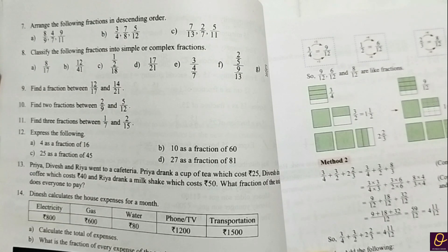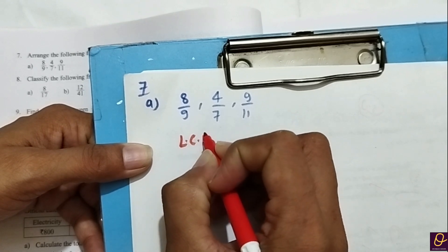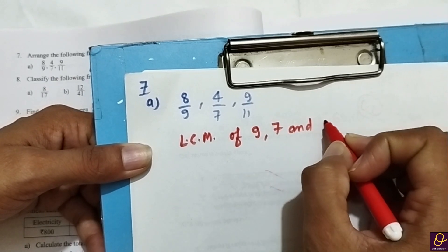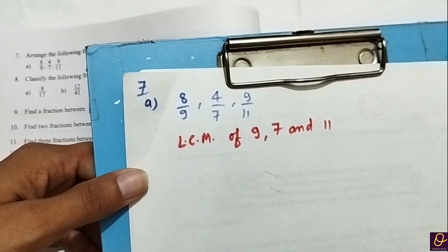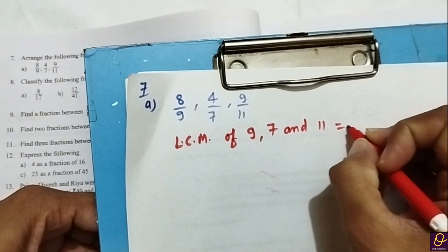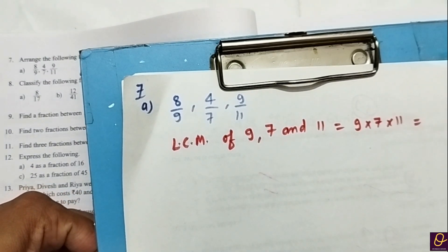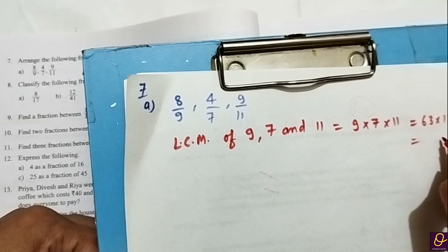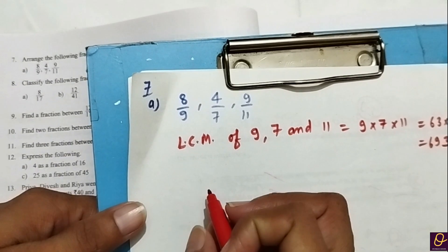For descending order, we take LCM of 9, 7, and 11. We have different numbers so we multiply them: 9 × 7 × 11. That gives 63 × 11 = 693. So our LCM is 693.